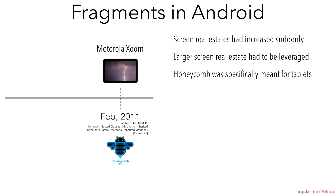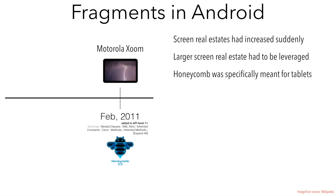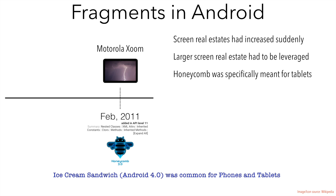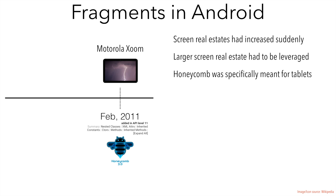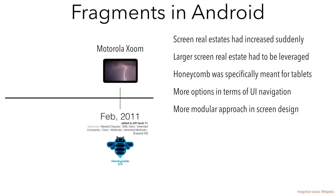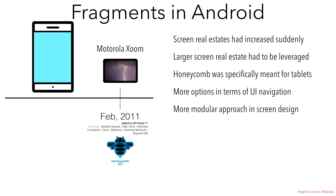Honeycomb was specifically meant for tablets. This also had another effect — there was a lot of fragmentation in the Android OS, but it was later fixed by making sure that the next version of Android was common for both tablets and mobile phones. With the introduction of Honeycomb and larger screens, there were more options in terms of UI navigation that you could implement in apps. It was like a more modular approach in screen design could be brought in. When you launch an activity and you want to navigate to a next screen, you launch another activity.